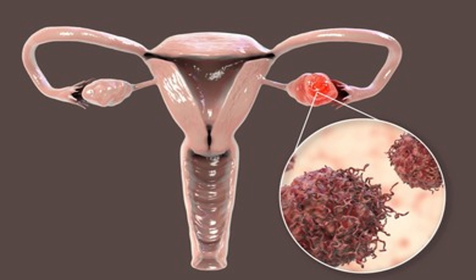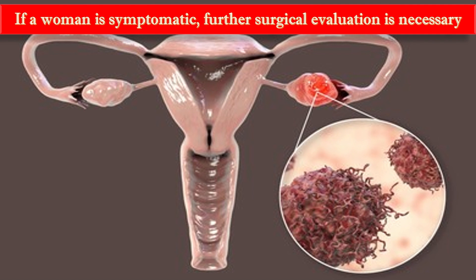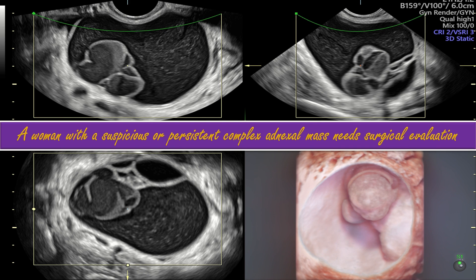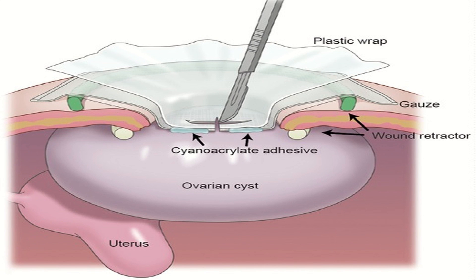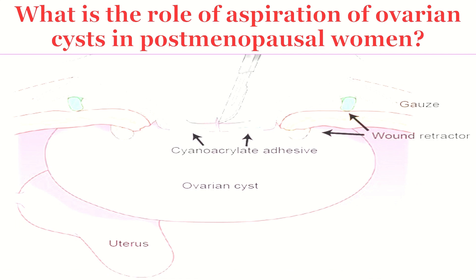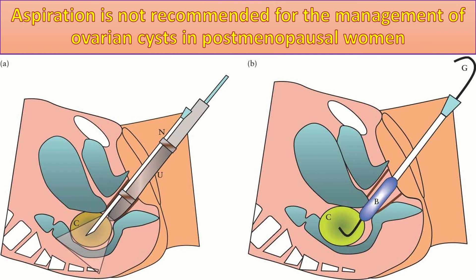If a woman is symptomatic, further surgical evaluation is necessary. A woman with a suspicious or persistent complex adnexal mass needs surgical evaluation. Aspiration is not recommended for management of ovarian cysts in postmenopausal women, except for symptom control in women with advanced malignancy who are unfit to undergo surgery or further intervention.